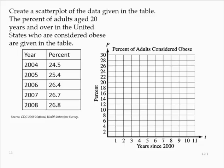Here we have a grid set up, which puts the year since 2000 on the horizontal axis, labeled t, and the percentage on the vertical axis.